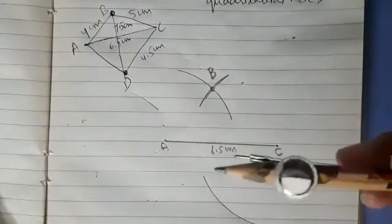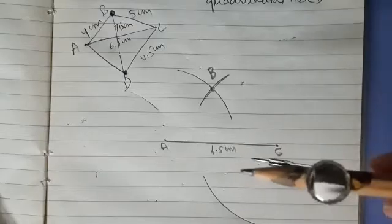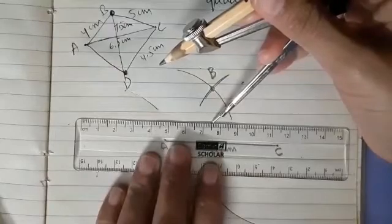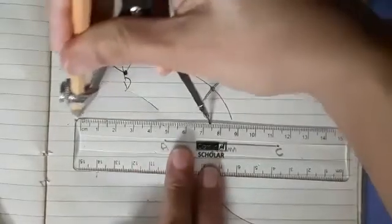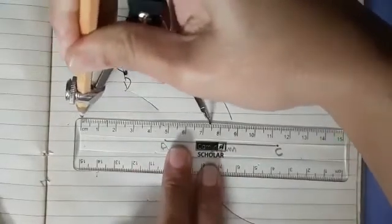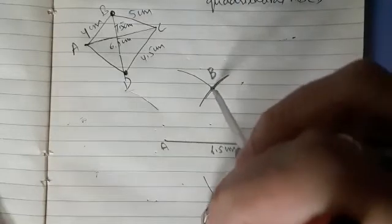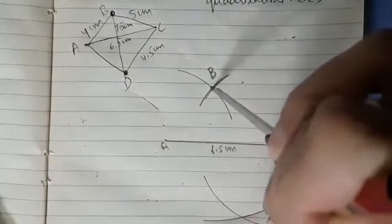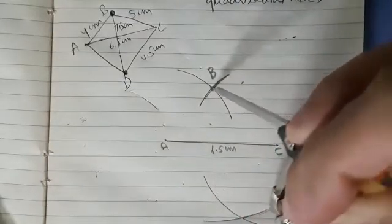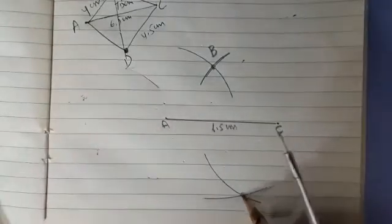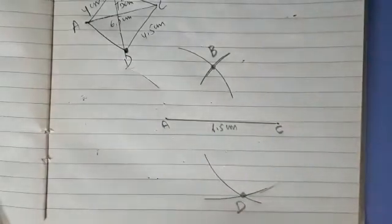After that it is given the diagonal BD is 7.5 cm. So we will take the radius 7.5 cm. After that we will put the compass at B. So that means with B as center and radius 7.5 cm cut the previous drawn arc. Now the point of intersection of the two arcs is the vertex D of quadrilateral.